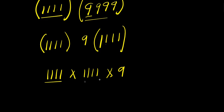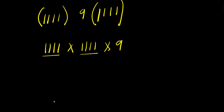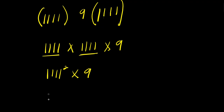This times this is just like writing 1111 squared, because 1111 appears in two places. So we have 1111² times 9. And since 9 is 3², this gives us 1111² times 3².